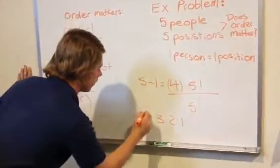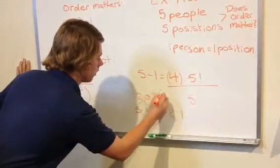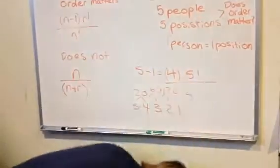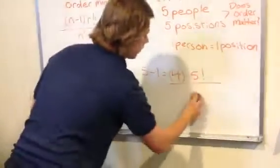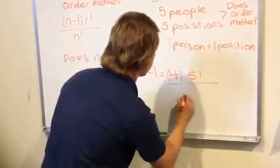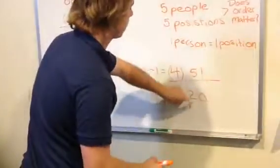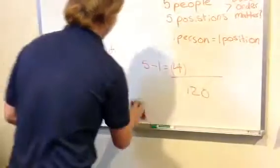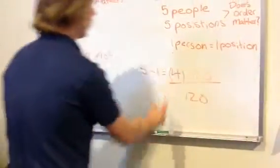You go to 5 times 4 is 20, times 3, that's 60, times 2, that's 120. Let me erase that. So you've got 120 on the bottom, and you've got the same thing up here, 5 with that is 120, times 4.